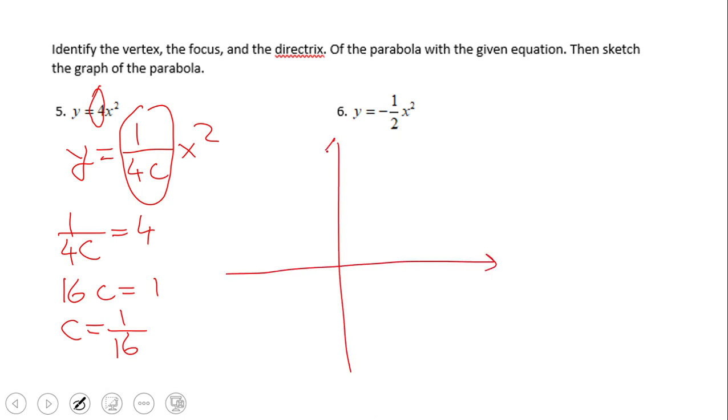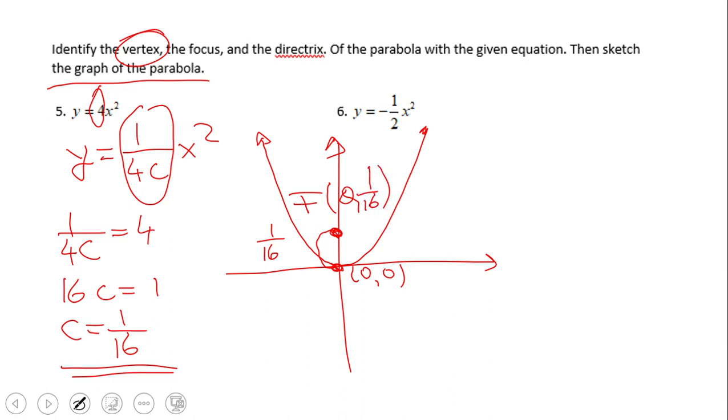Now what is the meaning of this c equals 1 over 16? We do have all those formulas in the previous library. Let me show you this graphical method which will help us to remember. First of all, this is an open up parabola because it's y equals 4x², and obviously the vertex is zero and zero. Now how do we find the focus? This c equals 1 over 16 is going to help us. We're going to move up inside of the parabola, and that will be the focus. How much? 1 over 16.